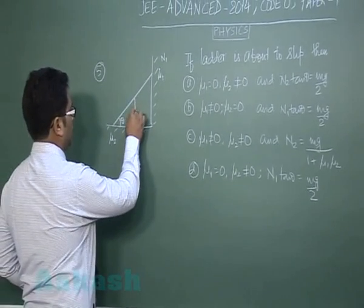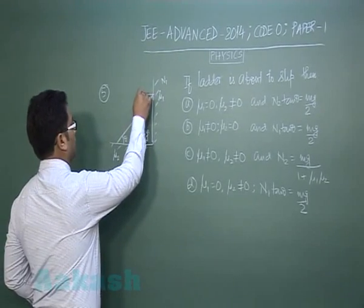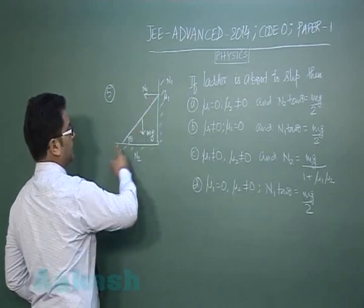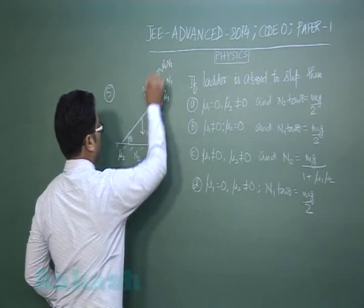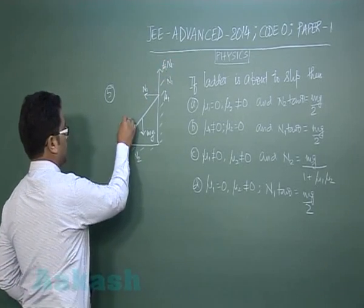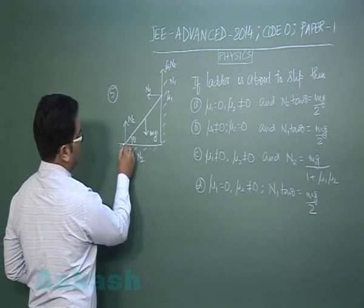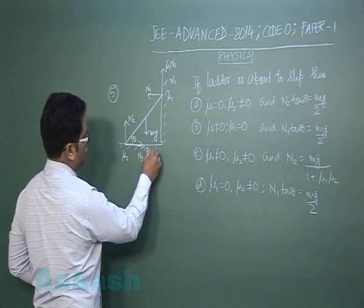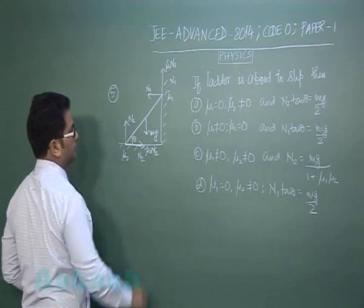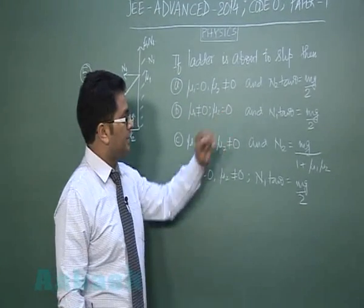So if we at all make the free body diagram, this is mg, this is n1, it has a tendency to slip down, so mu1 n1, this is n2, and quite obviously slipping here, so this will have mu2 n2 here. And based on different conditions of mu, we got to answer.